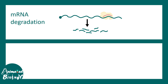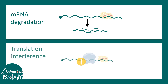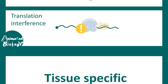How does microRNA regulate gene expression? There are two ways. First, by degrading the mRNA. Second, by translation interference — sometimes when the RISC complex, which is a bulky complex, binds to the RNA, even if the RNA binds to the ribosome, translation doesn't happen because the complex acts like a roadblock.